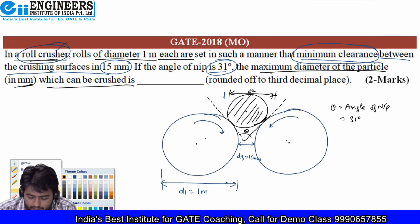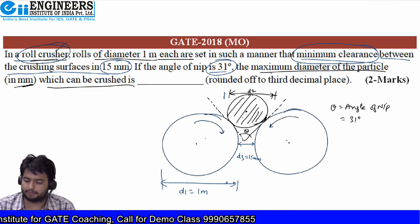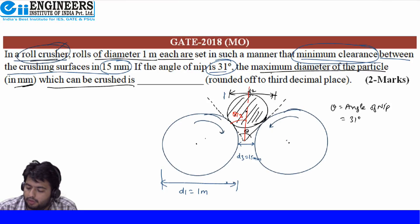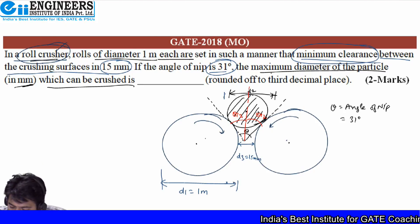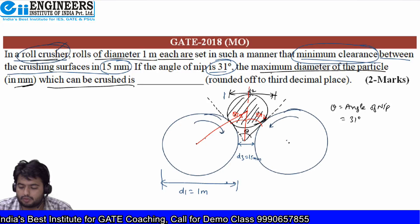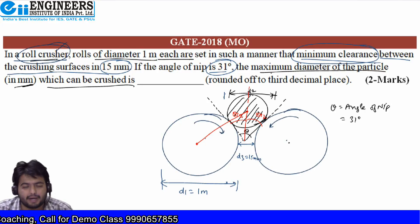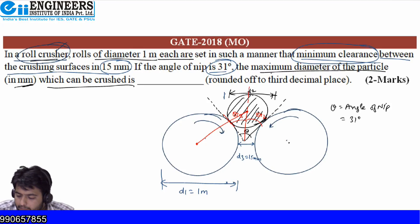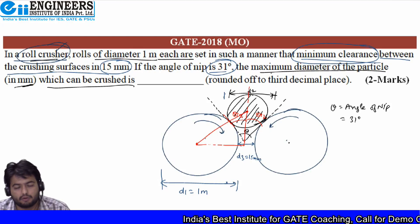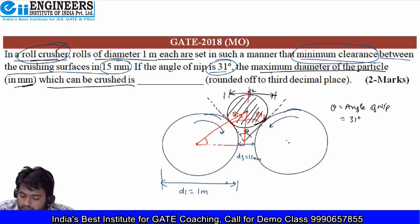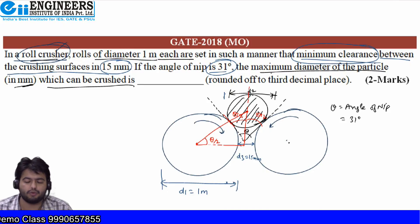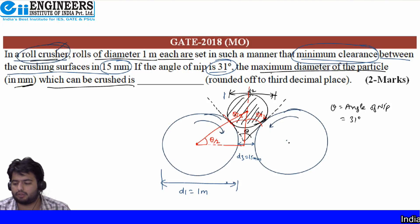This is a simple problem using geometry. From the concept of perpendicular lines, the angle between the line of centers and the line joining the two roll centers is also θ/2. Using trigonometric properties: cos(θ/2) = base/hypotenuse. The base of the triangle = D1/2 + D3/2, and the hypotenuse = D1/2 + D2/2.